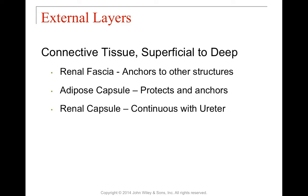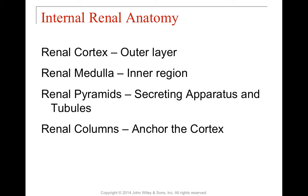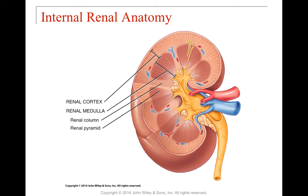Going from superficial to deep, we start with the renal fascia on the outside anchoring the kidneys to surrounding structures. Just underneath that is an adipose capsule — a bit of fat tissue that helps protect and anchor it. Then underneath that is the renal capsule, which connects directly to the ureter. If we look at the kidney itself, the outer layer is the cortex and the inner layer is the medulla.